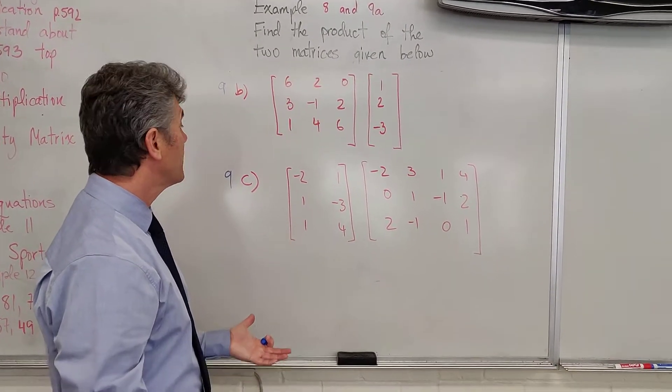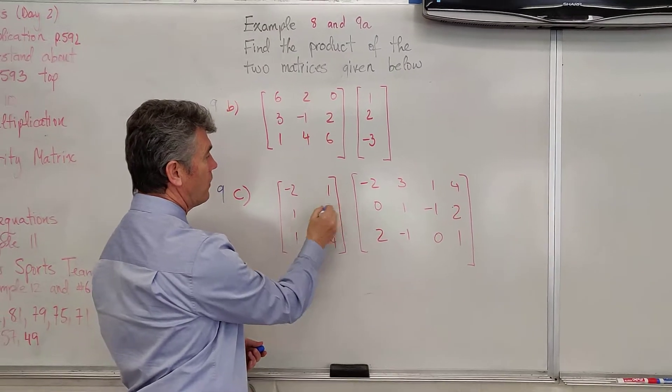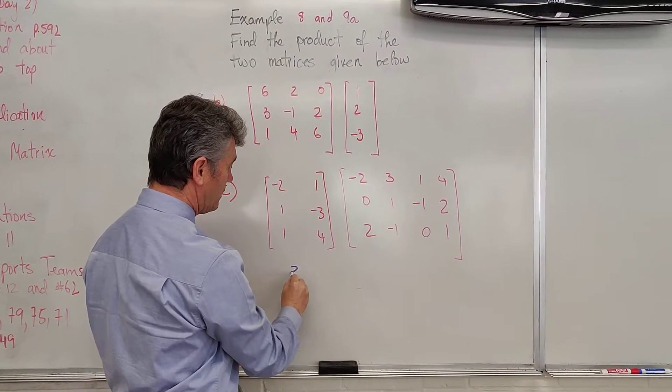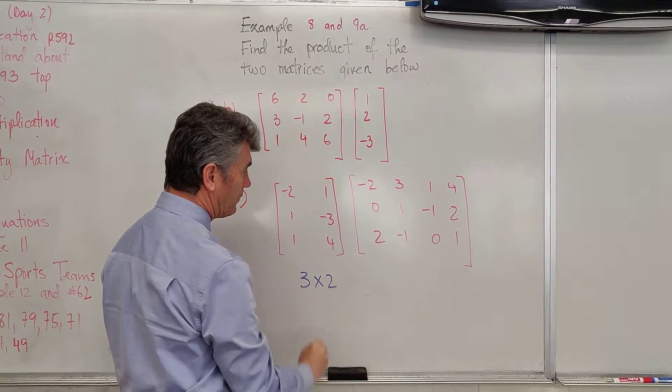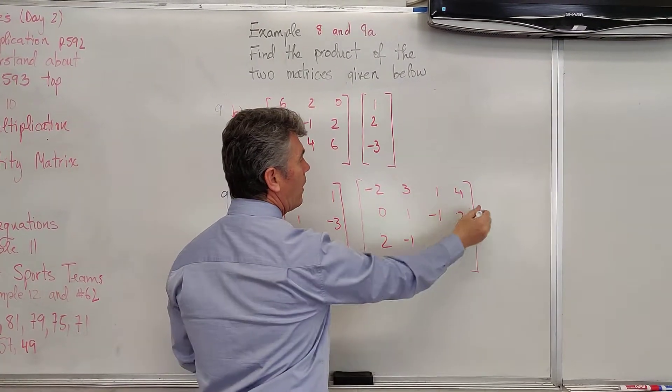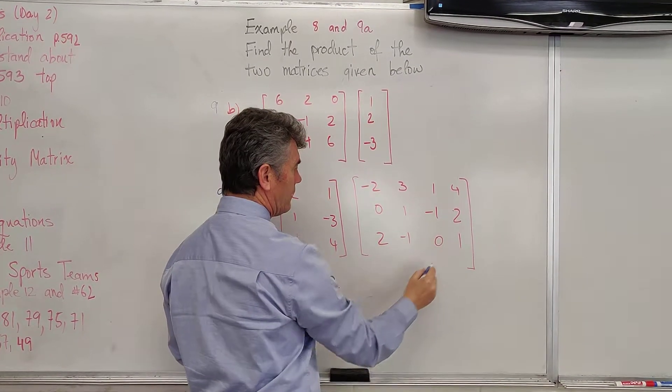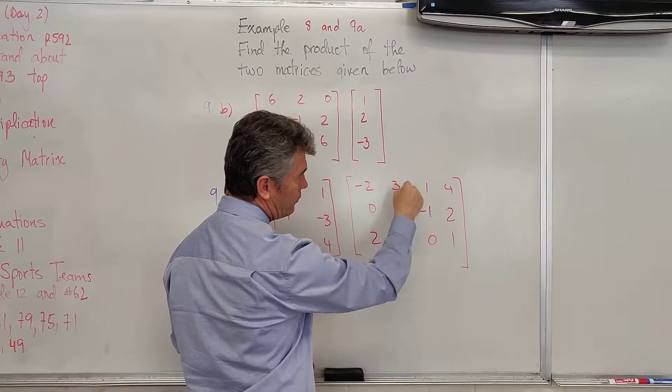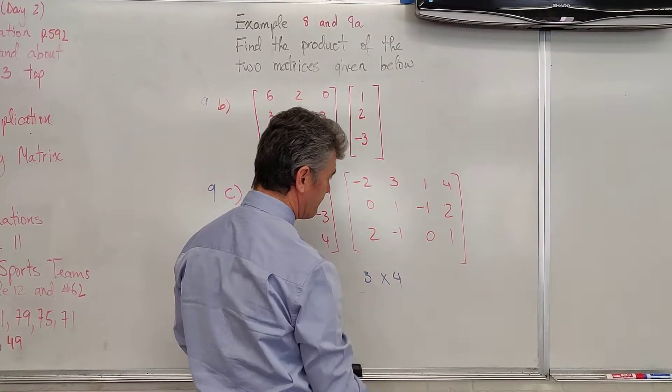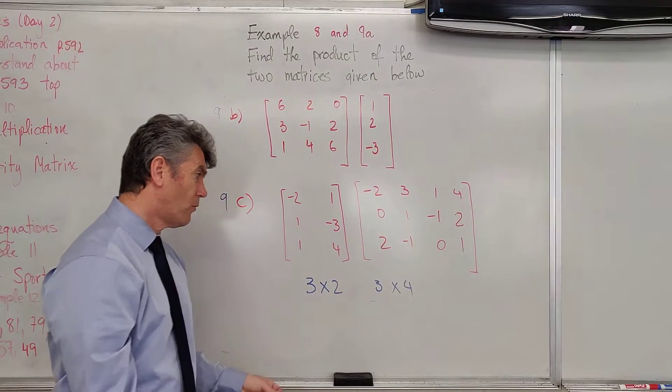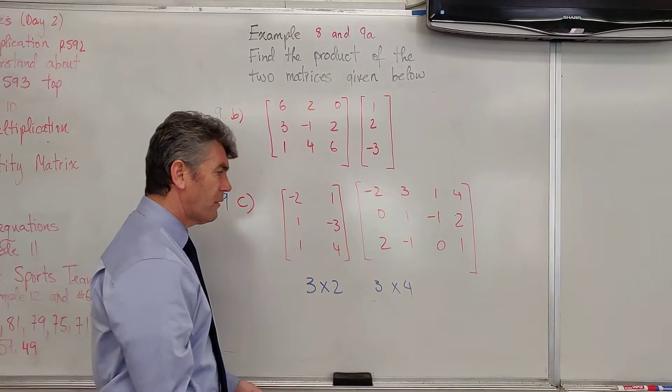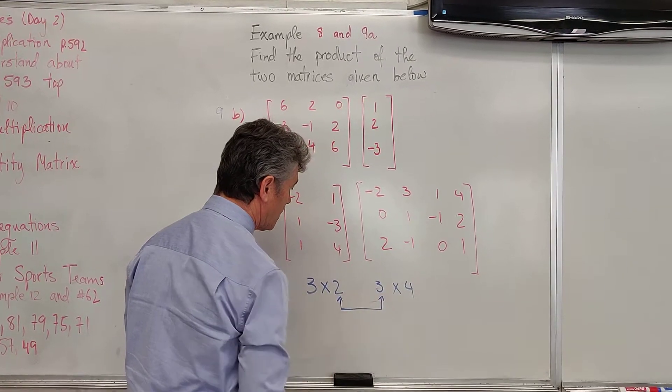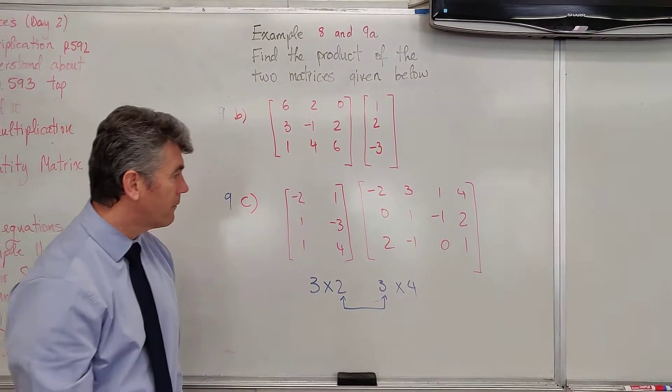The first thing that you want to do is find the dimensions. 1, 2, 3 rows. 1, 2 columns. The matrix on the left is 3x2. And then 1, 2, 3 rows and 1, 2, 3, 4 columns. So we are trying to multiply a 3x2 by a 3x4. As well, always check the dimensions in the middle. Uh-oh. We've got a problem.